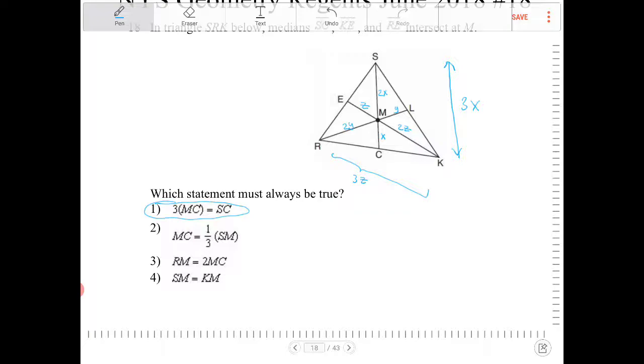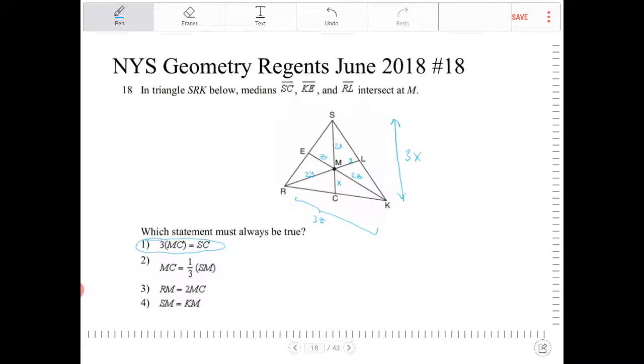Option four, SM is equal to KM. Again, we cannot argue whether or not those partitions there from two separate medians, whether or not they have the same length. There's not enough evidence to support that.